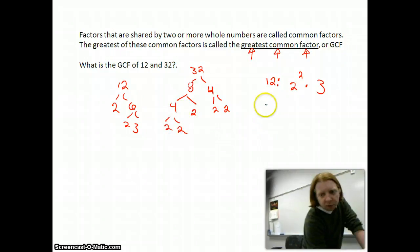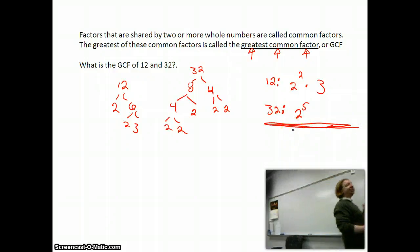So when I look at all the ones that make up 32, I'm left with 1, 2, 3, 4, 5 2's, so 2 to the 5th. Now I'm not adding or subtracting here, I'm just organizing them.